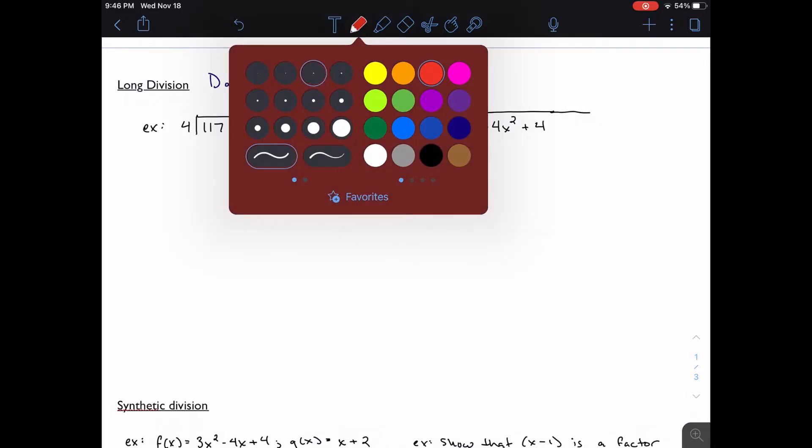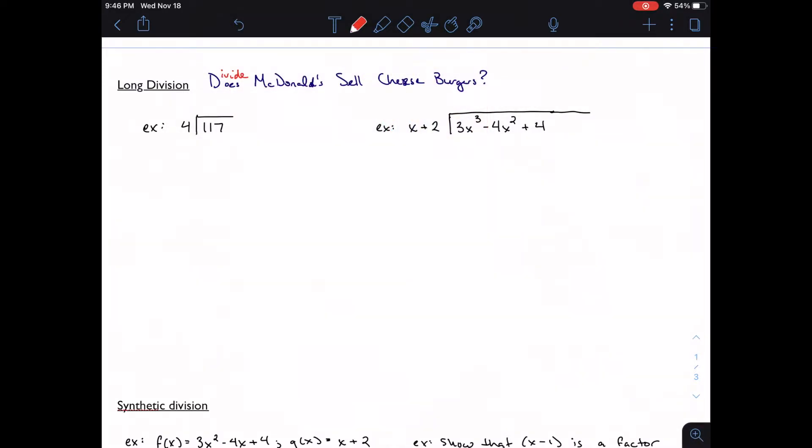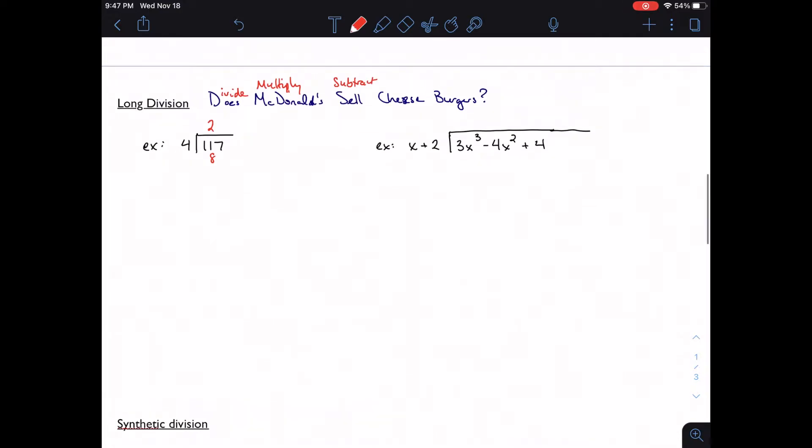I would take my steps and divide. So 4 goes into 1 zero times, 4 goes into 11 twice. I would multiply, so 4 times 2 is 8, and then I would subtract, so 11 minus 8 is 3.